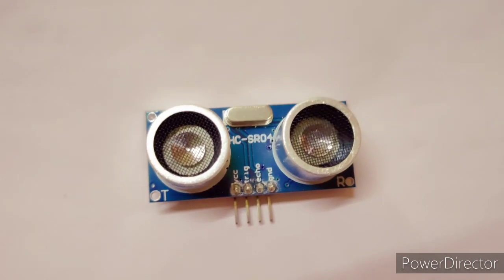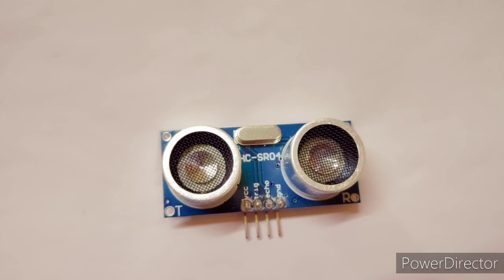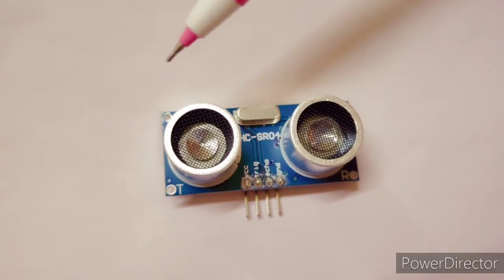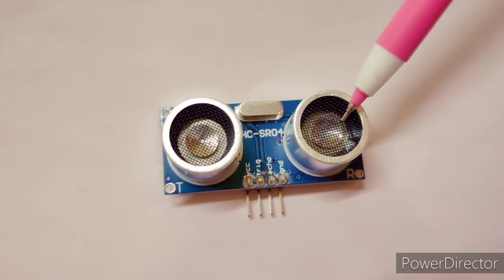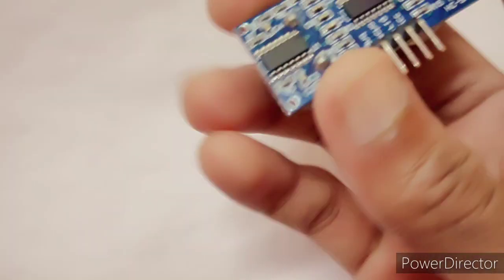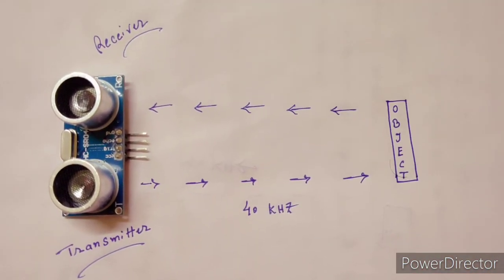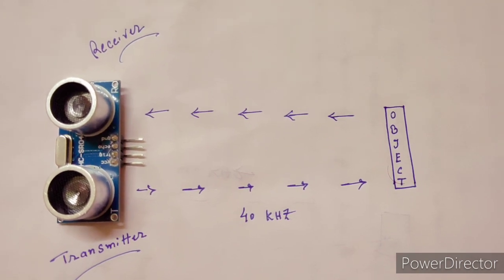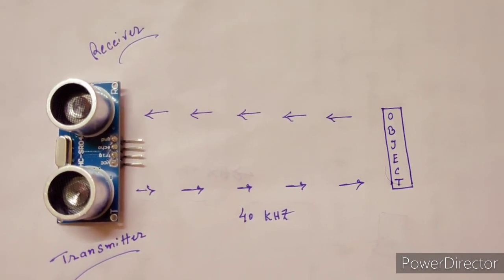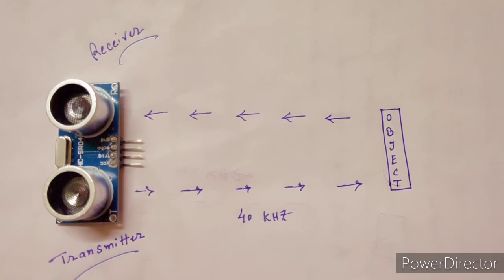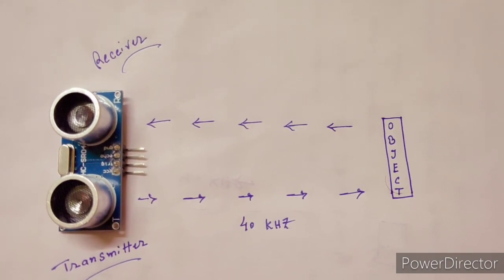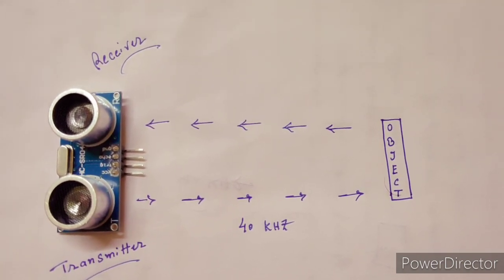Ultrasonic sensors have two transducers - one for transmitter and another for receiver - and a control circuit. The transmitter of the module transmits ultrasonic sound of 40 kilohertz. This sound will be reflected back if an object is present in front of it. The reflected sound wave is received by the receiver present in the module.